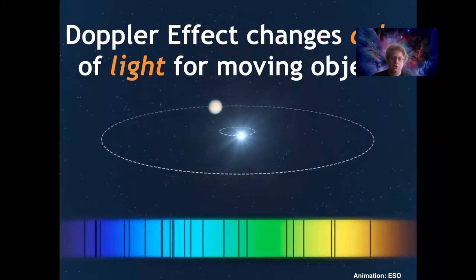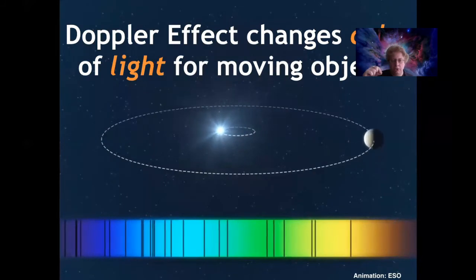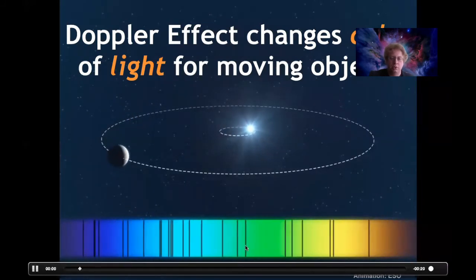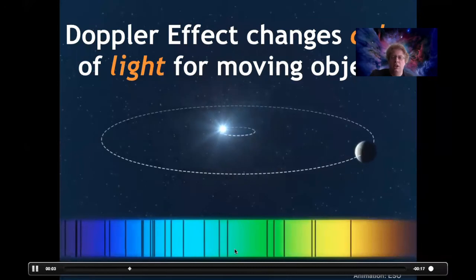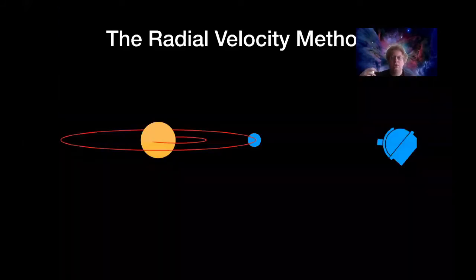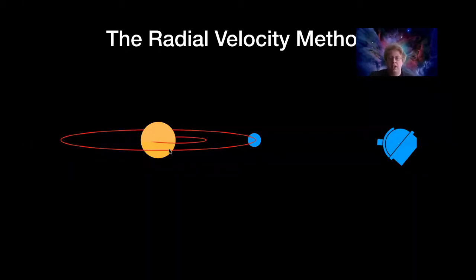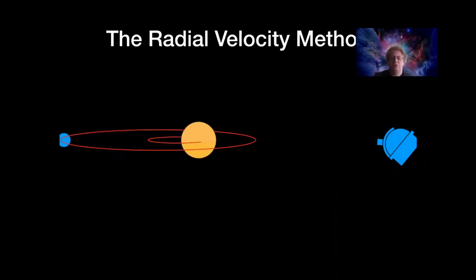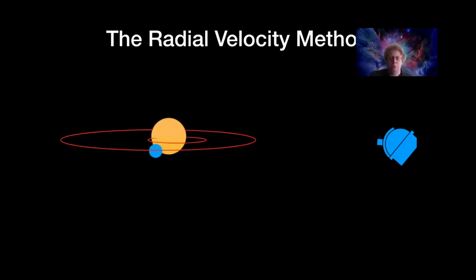This exact same thing happens for light, but instead of changing the pitch, it changes the color. So when you have a star being orbited by a planet, it very slightly changes the color of the light from that star. We can measure that by looking for the very specific absorption lines — the fingerprints of the elements in the star — and seeing if they're very slightly shifted either forward or backward from where we expect them to be. This is called the radial velocity method. We take observations of the star at many different times and look for changes in the velocity, changes in the color of the lines, that match up with an orbiting planet.